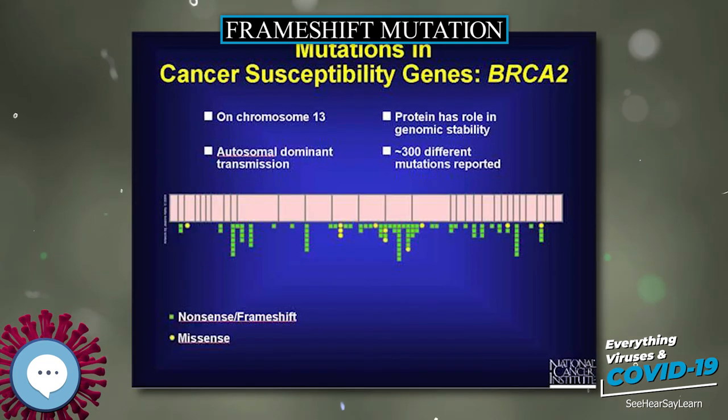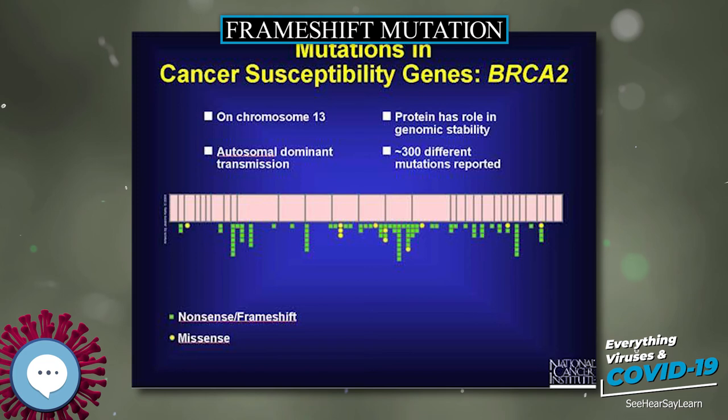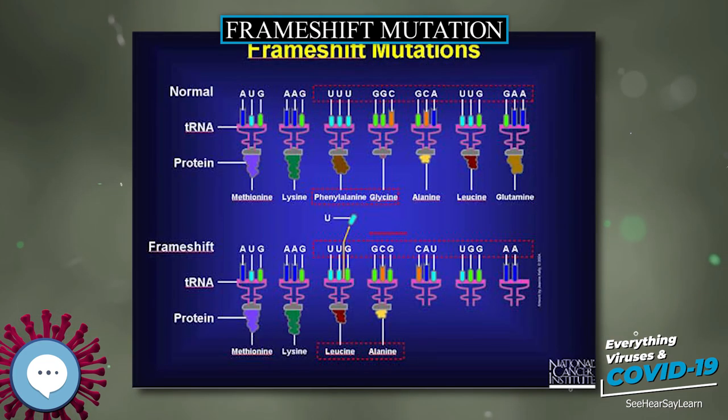The frameshift mutations in Tay-Sachs lead to an early stop codon, which is known to play a role in the disease in infants. Delayed onset disease appears to be caused by four different mutations, one being a three base pair deletion.